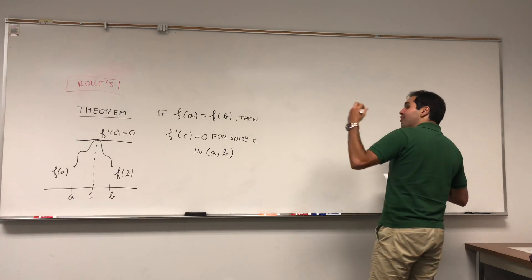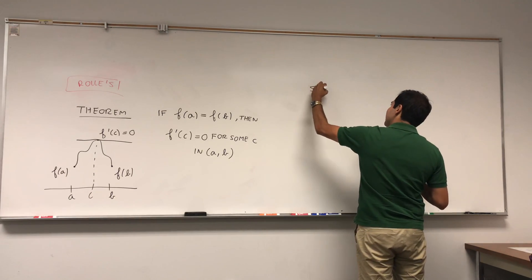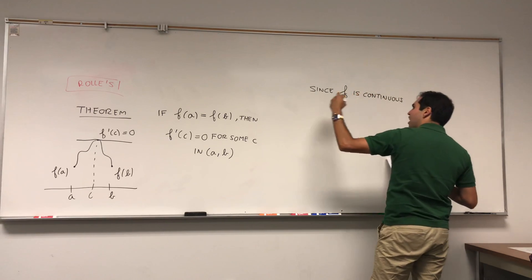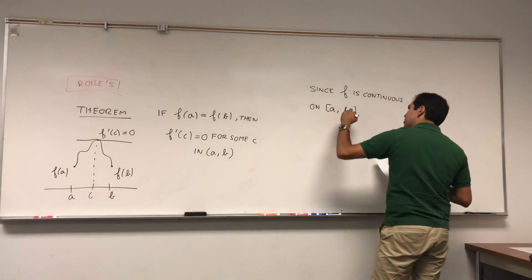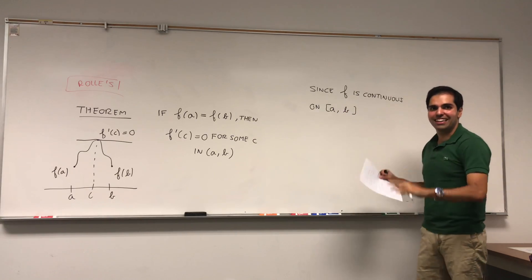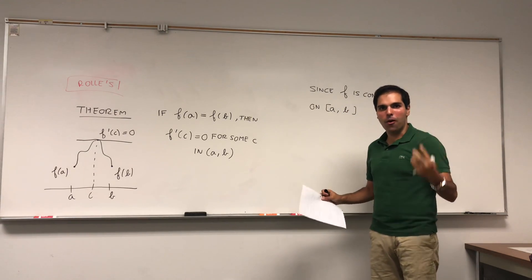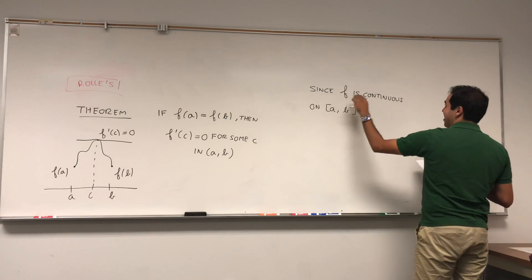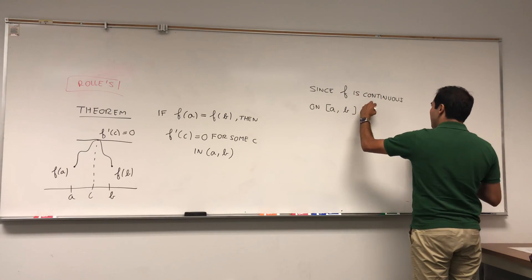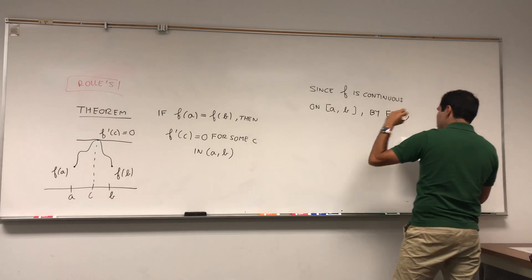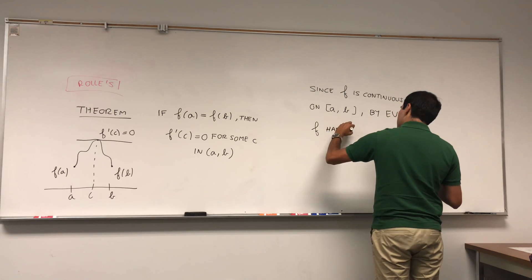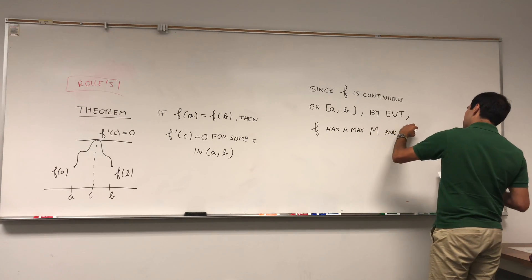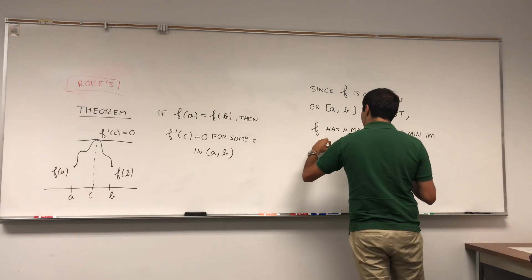How do we know there is a max? It has to do with continuity. Since f is continuous on the closed interval [a, b] — it's important that it's closed and finite, because once it's that, it's called compact — and once you have a compact interval, you can use the extreme value theorem. By the extreme value theorem, we know that f has a max, capital M, and a min, lowercase m, on [a, b].